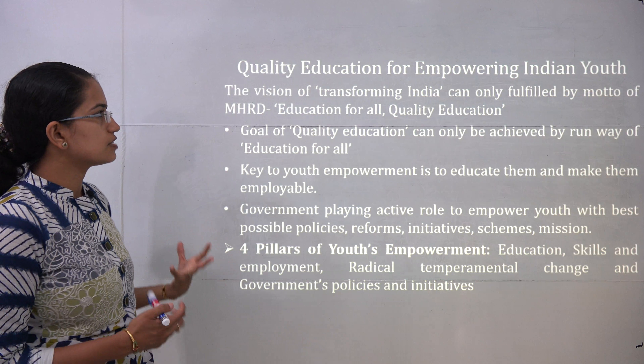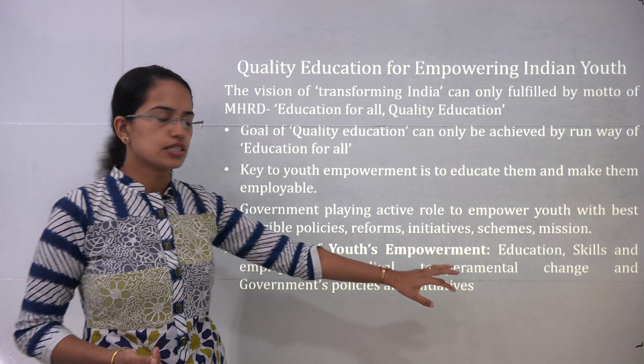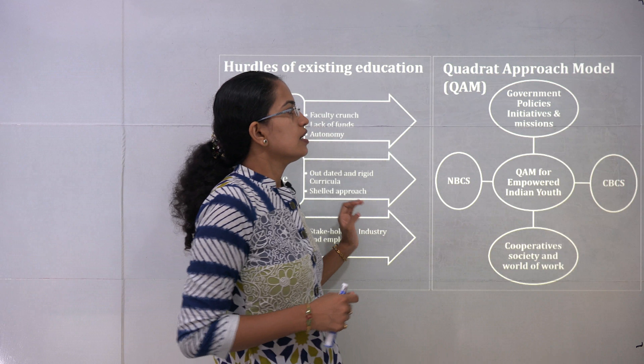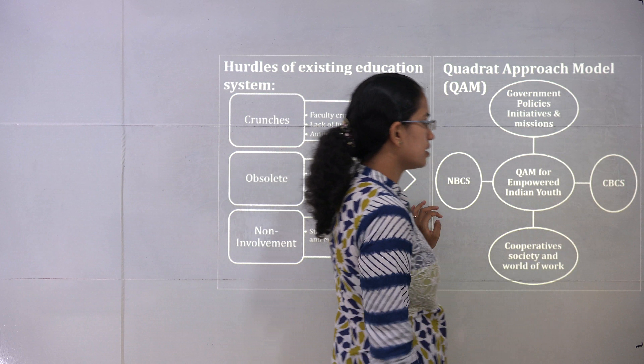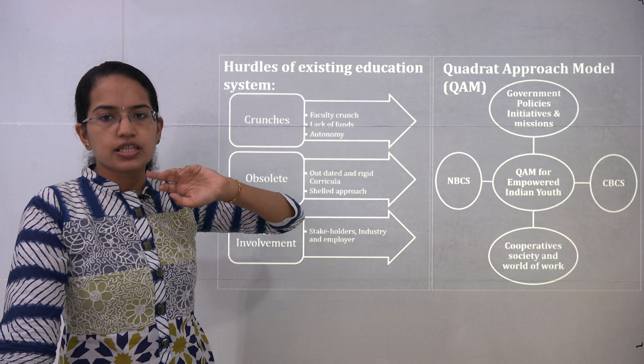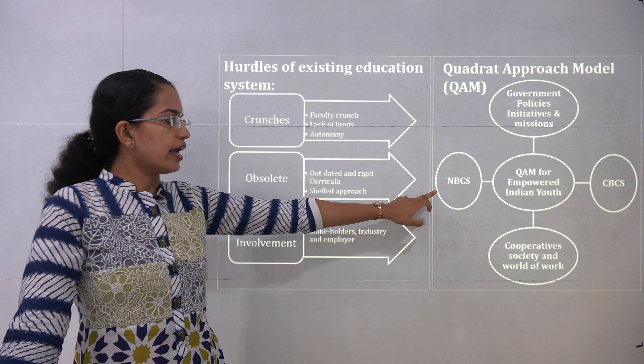Quality education to empower youth is very important, achievable only by education for all. The 4 pillars of youth empowerment are education, skill development, radical temperamental change, and government policies. Hurdles in education include lack of facilities, lack of autonomy, obsolete curriculum, and non-involvement of employer industries. The quadrant model of empowerment focuses on a student-centric approach, an employer-centric approach, the NBCS, and cooperatives and government initiatives.